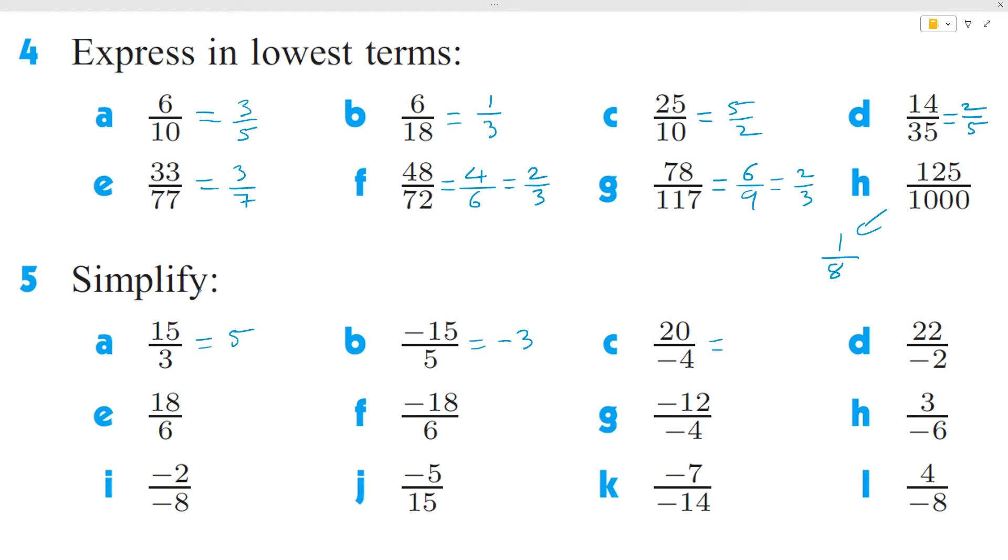Question c, 20 divided by 4 is 5, but it's again a negative 5. Question d, 22 over 2 is 11, but this is going to be negative 11 because we have a positive divided by a negative.